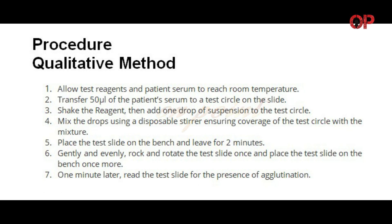Procedure — qualitative method. Step one: allow test reagents and patient serum to reach room temperature. Step two: transfer 50 µL of the patient serum to a test circle on the slide. Step three: shake the reagent, then add one drop of suspension to the test circle. Step four: mix the drops using a disposable stirrer, ensuring full coverage of the test circle with the mixture.